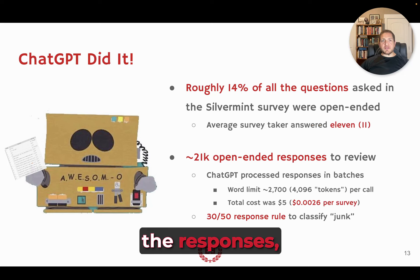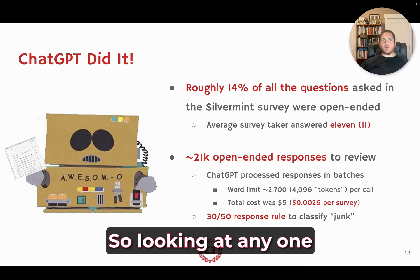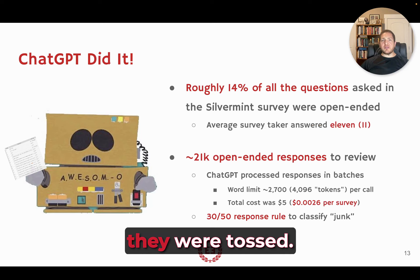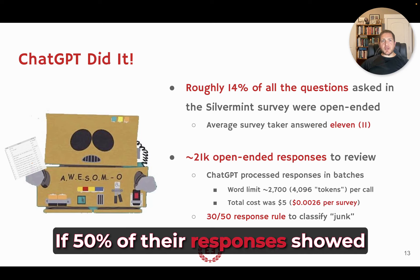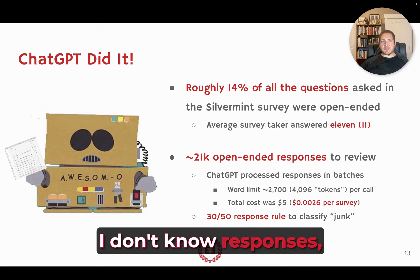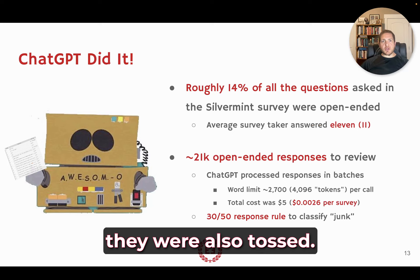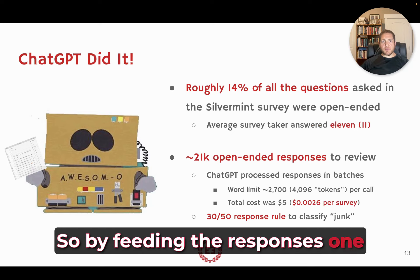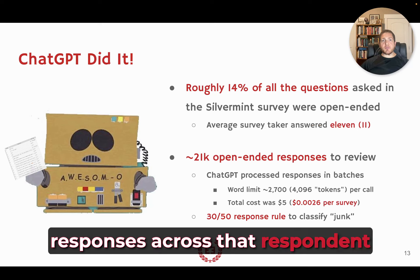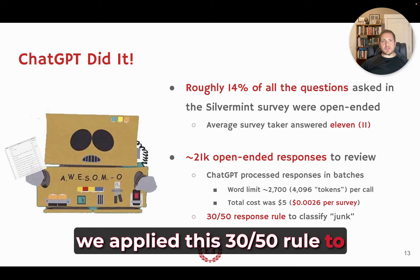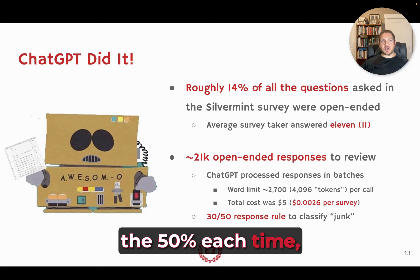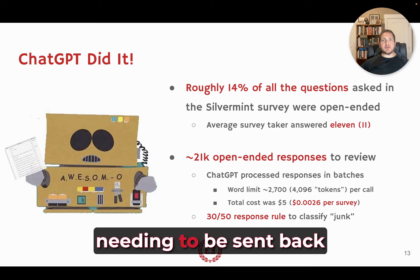The total cost was under $5, or 0.0026 cents per survey. When we finished, we applied a 30-50 rule: looking at any one survey taker, if 30% of their responses were coded as 'joker' or 'didn't care,' they were tossed. If 50% of their responses showed disengagement — short responses, 'I don't know,' 'not interested' — they were also tossed. By feeding responses one by one into ChatGPT and evaluating the totality across each respondent, we used this 30-50 rule to decide which surveys to send back.